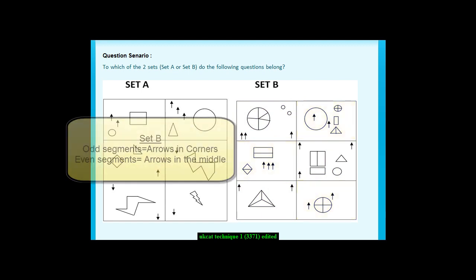In conclusion, for set B, if there are odd number of segments in the shapes, there are arrows in the corner. When there are even number of segments in the shape, the arrows are in the middle of the box.